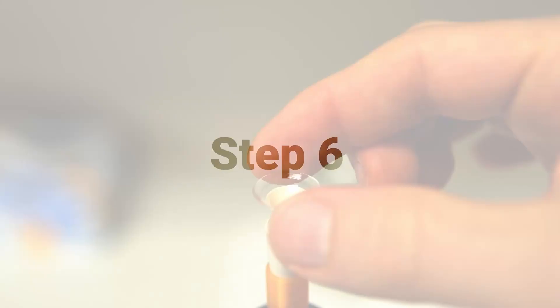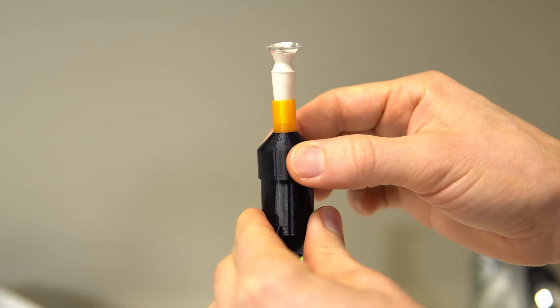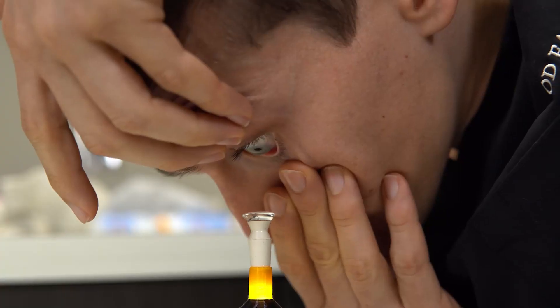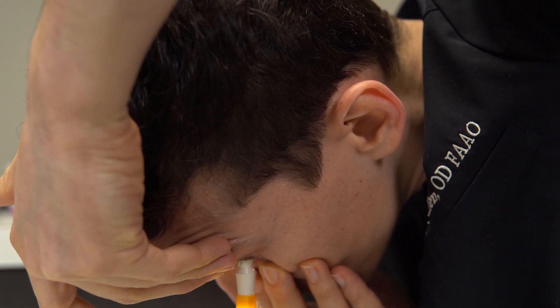Step six: for your second eye, repeat the steps we covered to prepare your lens for insertion, turn on the light unit, and repeat the technique shown for how to bring your eye to the lens.